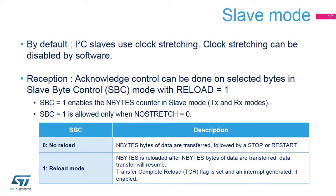In receive mode, when Slave Byte Control is enabled with the Reload Bit set and the number of bytes to be transferred is 1, the Transfer Complete Reload flag is set after each received byte, and the SCL line is stretched. This is done after data reception and before the Acknowledge pulse. The Receive Buffer Not Empty flag is also set, so the data can be read. In the TCR subroutine, an Acknowledge or Not Acknowledge can be programmed to be sent after the byte is received. It is recommended to clear the SBC bit in transmission as there is no use for the byte counter in I2C Slave Transmitter Mode.